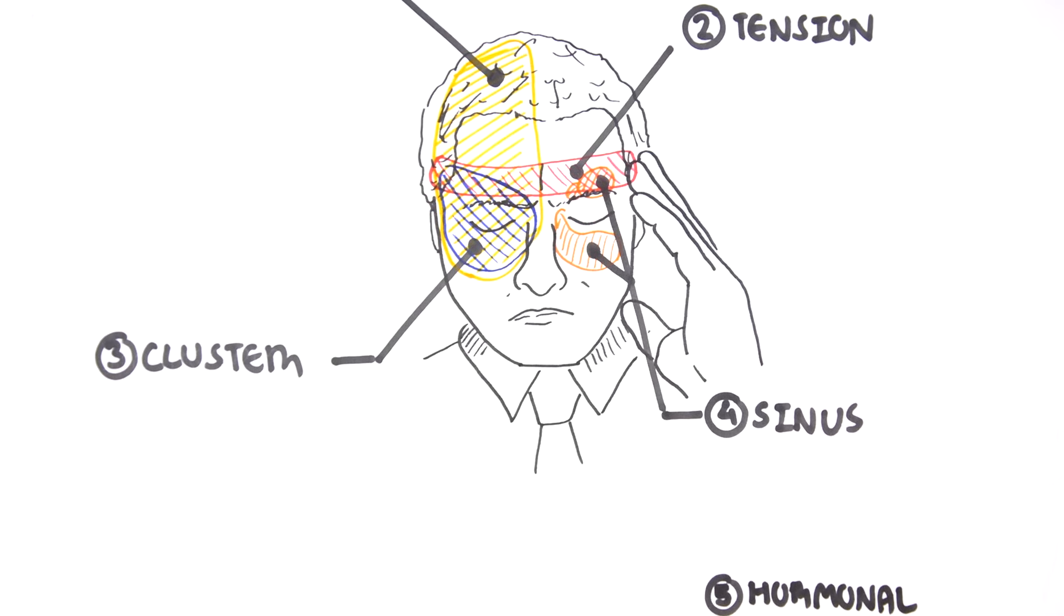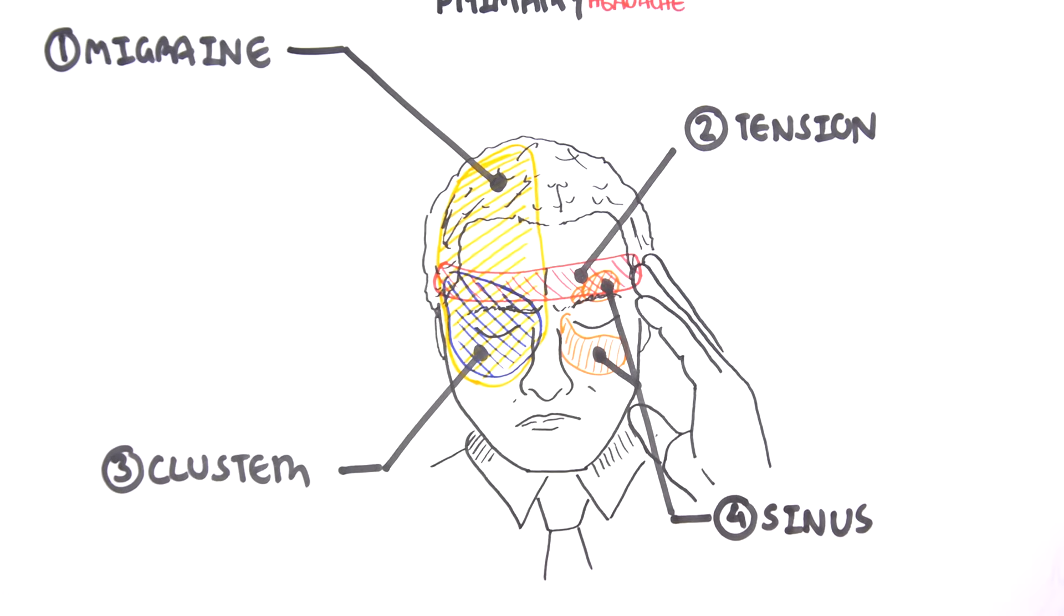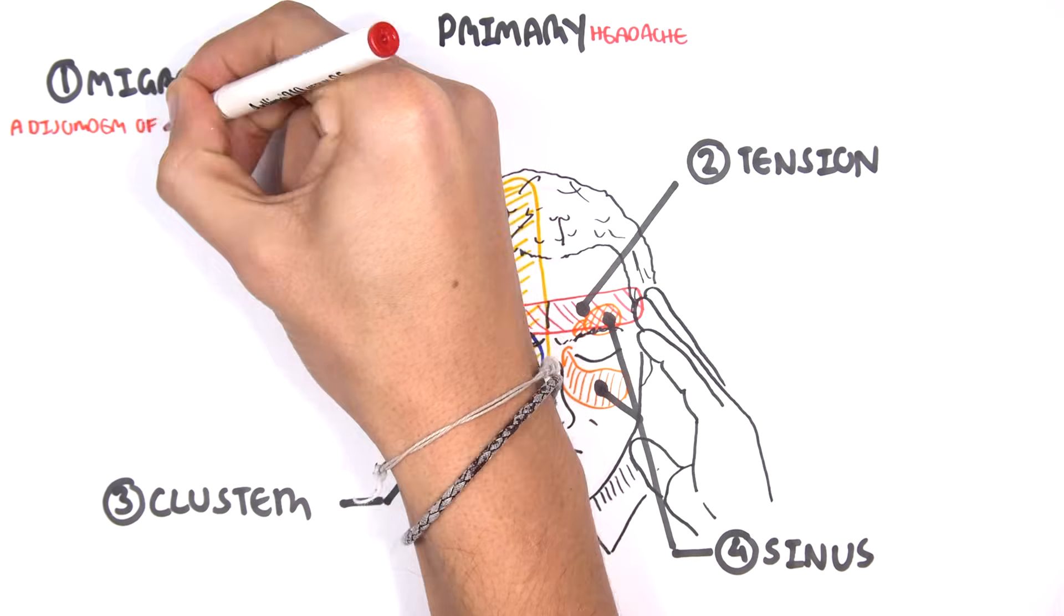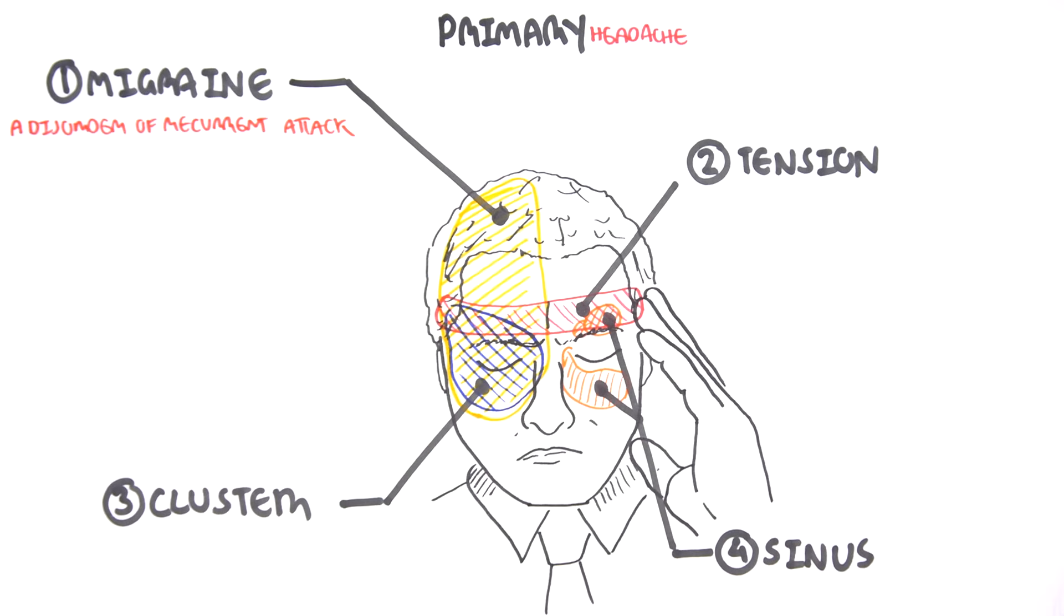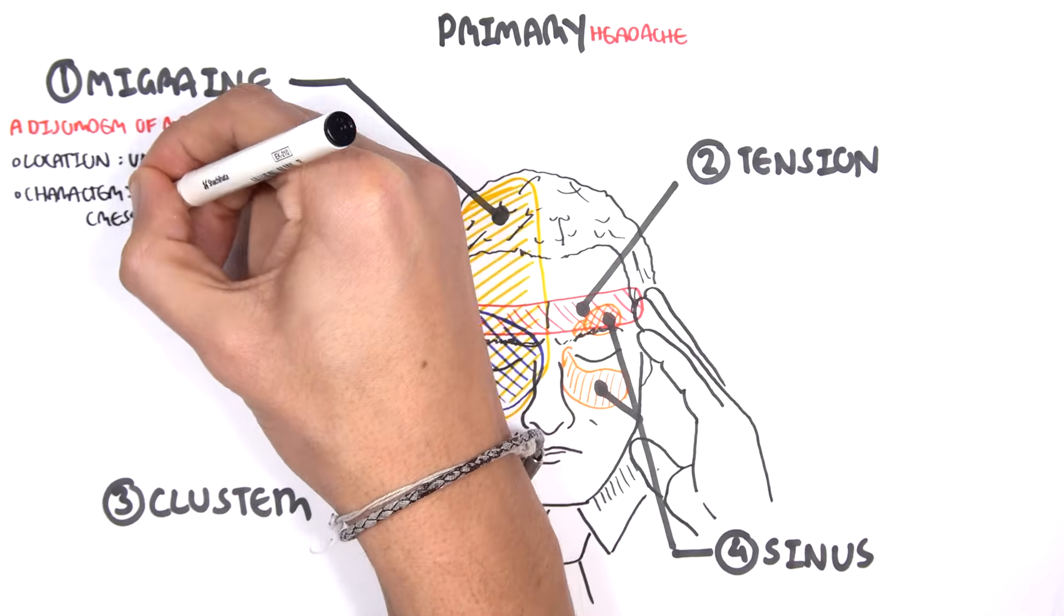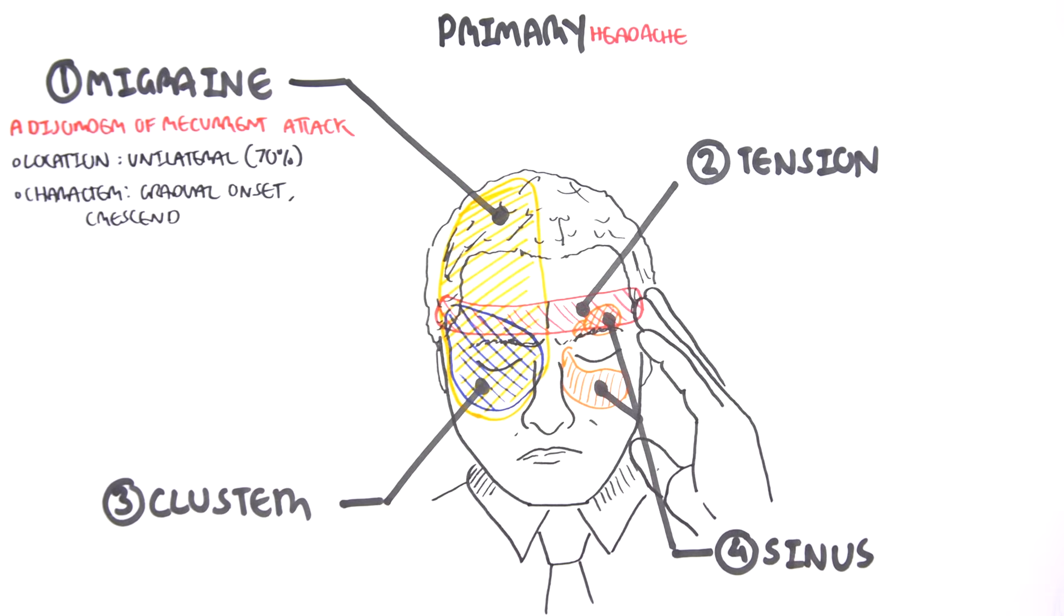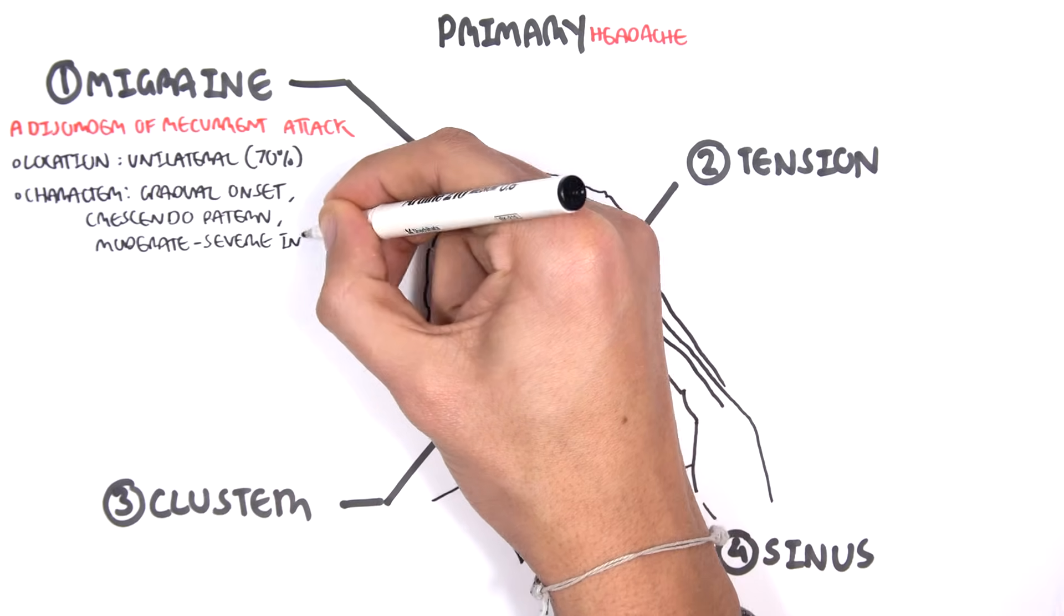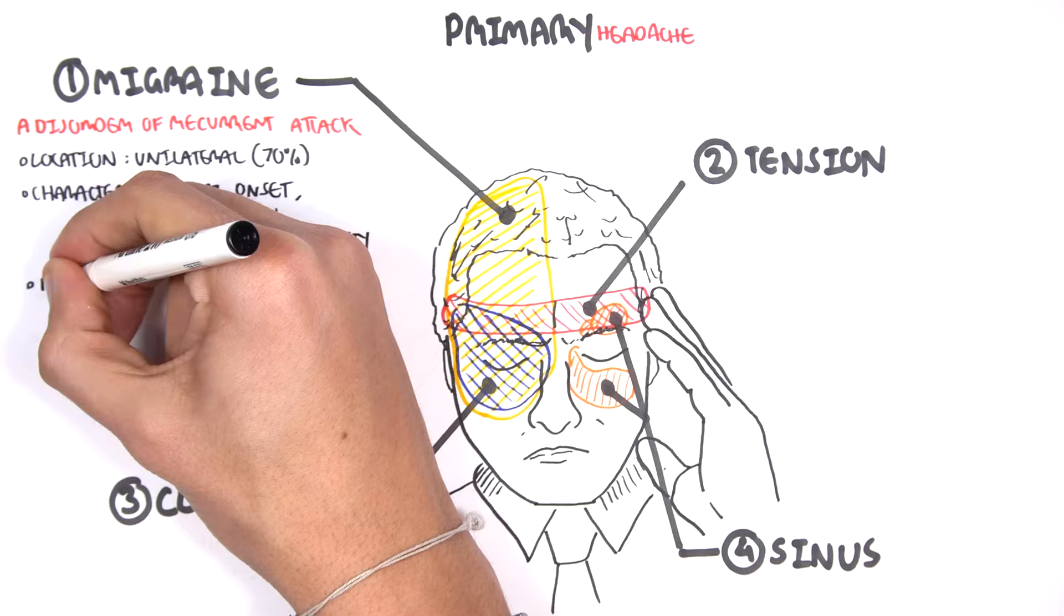Let's talk about each of these types of headaches in more detail, beginning with migraine. Migraine is a disorder of recurrent attack, so it comes and goes. The location of migraine is mostly unilateral, 70%. The characteristic of the headache: gradual onset, crescendo pattern, which is basically increasing intensity and frequency with moderate to severe intensity.